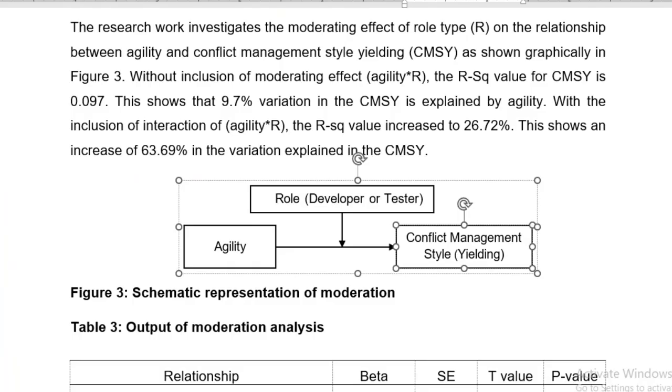Now we move towards the report writing. So in this research work, the moderating effect of role type on the relationship between agility and conflict management style has been carried out and shown graphically in Figure 3. Without inclusion of moderating effect, the agility multiplied by R. As I performed the simple regression analysis, the R-square value of the CMSY is 0.097.